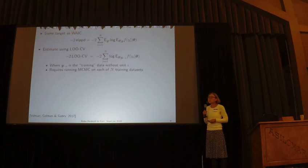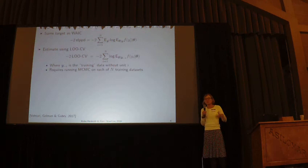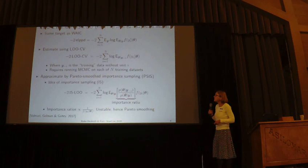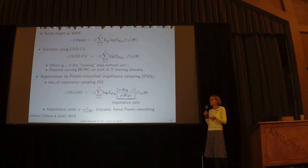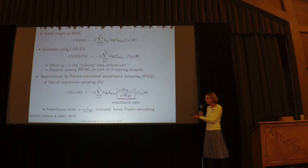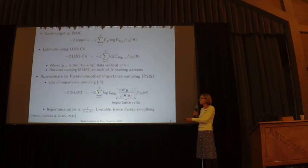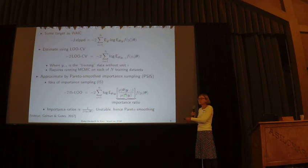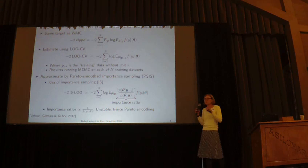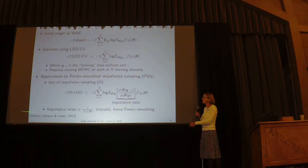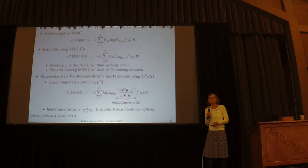Implementing leave-one-out exactly is computationally prohibitive because we would have to run MCMC for each training dataset. It's only really feasible for very tiny datasets like the famous eight schools data, where we would only have to run it eight times. In practice, what's done is PSIS — Pareto-Smooth Importance Sampling. The idea is that we can get away with doing MCMC only once by using the wrong posterior conditioning on all the data, then compensating with an importance ratio. The naive approach can be very noisy, which is why the Pareto-smoothing is needed. I refer you to the nice paper by Vehtari, Gelman and Gabry, 2017.